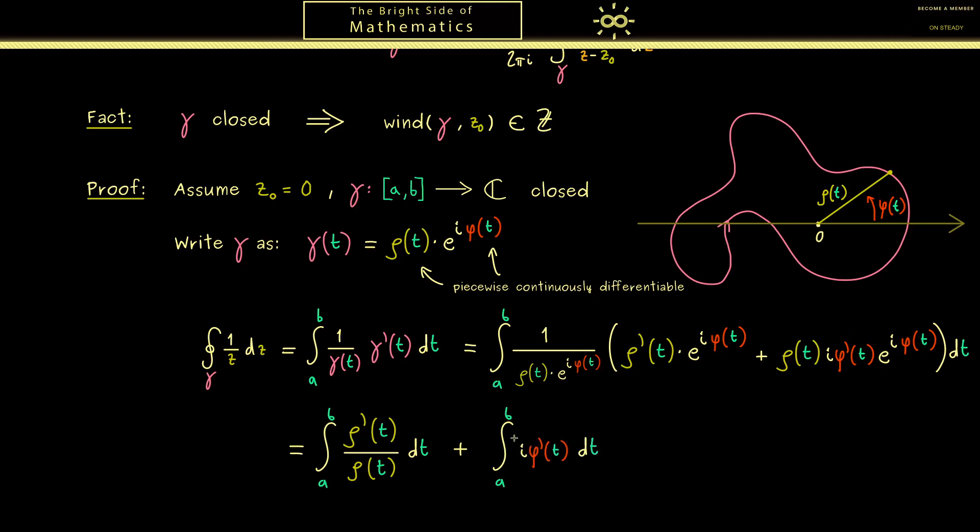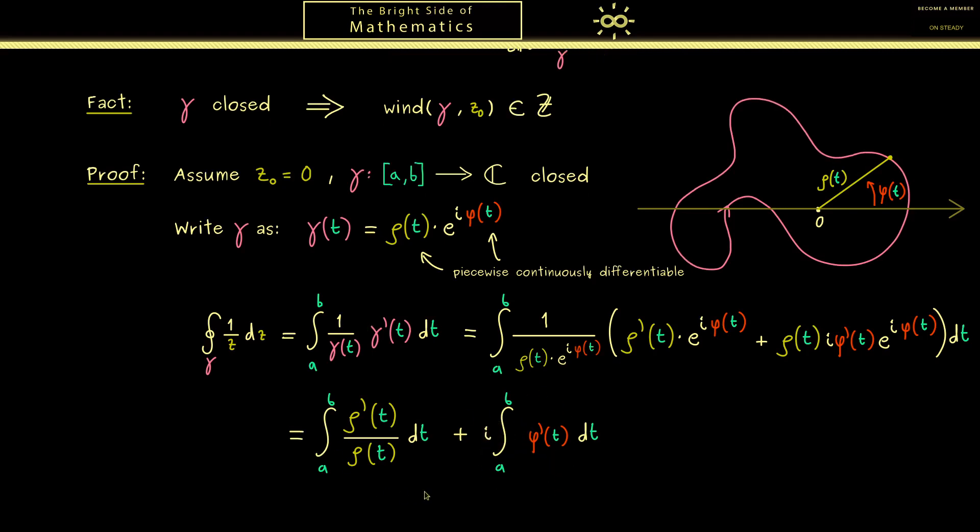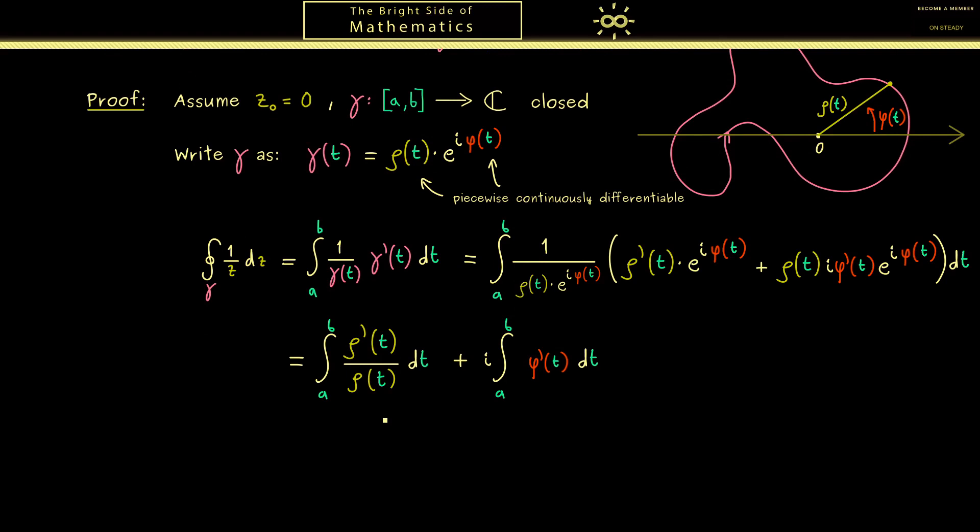In other words, you see now we have two real integrals that are very easy to calculate. The first one here, where we need an antiderivative, is just the logarithm of the positive function ρ(t). Hence the only thing we have to do here is to put in the limits a and b. Then we see for the second integral there the antiderivative is just φ(t). So you see also there it's easy to deal with, we just have to put in the limits a and b.